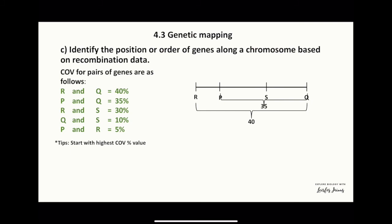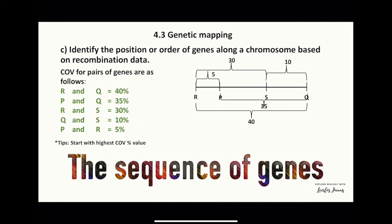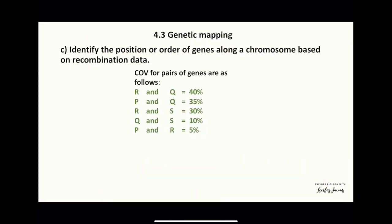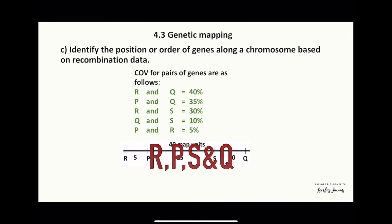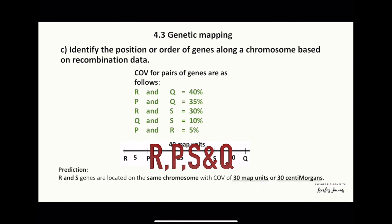Next, R and A is 30 map units, so A is between R and Q. Then Q and A is 10 map units, so A is located before Q. Finally, P and R is 5 map units, so P is situated just after R. To conclude, the position and order of the genes P, Q, R, and S on the chromosome is: R, P, S, and Q.